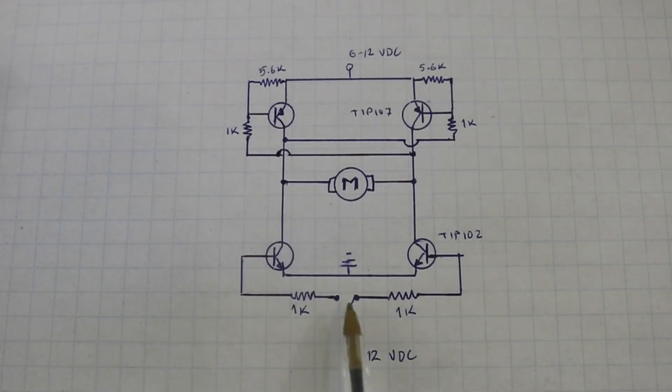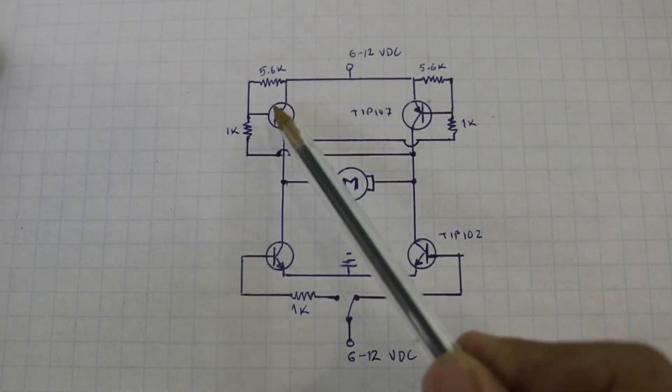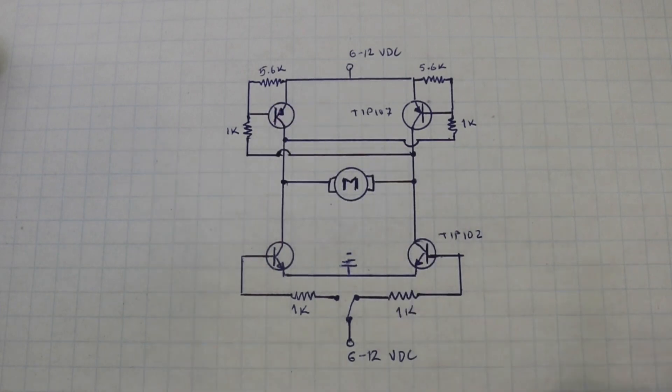Now with the switch you can select which of the two transistors have a voltage at its base. Let's suppose that the switch is like in the diagram so this transistor will be on but when this transistor is on the base of this other transistor which is PNP type will be grounded via this resistor. You see it goes to ground therefore it will also be on.